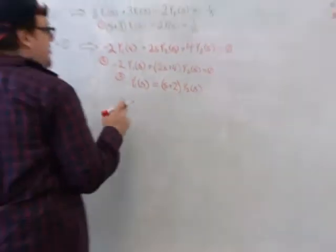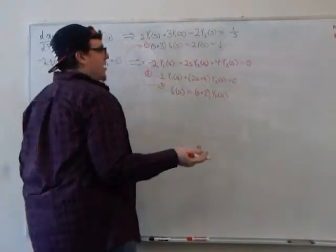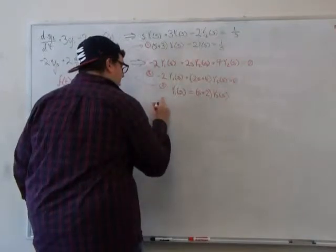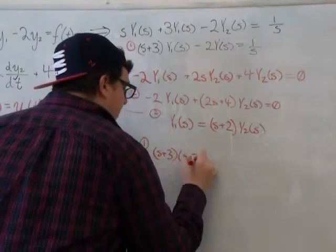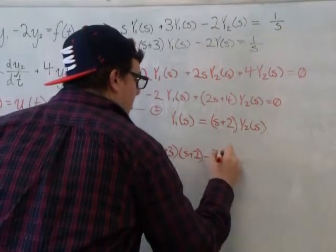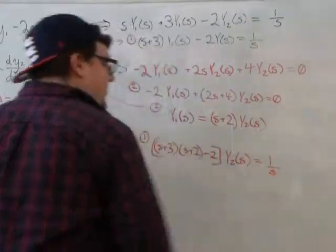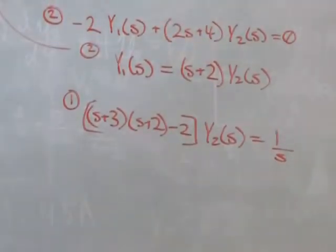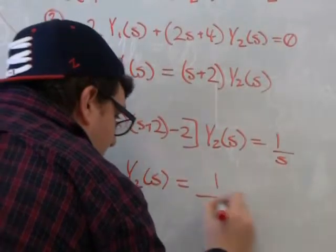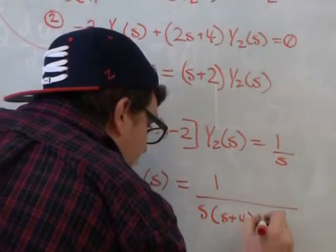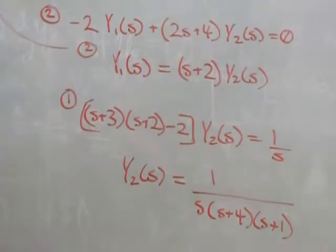And we get that y1(s) is equal to (s+2) times y2(s). And that comes from just the simplification of equation 2. So now that we have this guy, we're going to plug our equation 2 up here into equation 1 for y1, and then solve that out. So we end up with a simplification of equation 1. We get (s+3)(s+2) - 2 all times y2(s) equals 1/s. So now all we have is y2 and other variables that we should be able to solve for. We end up with y2(s) is equal to 1 over s times (s+4) times (s+1). And the reason we get this s+4 and s+1 is from the simplification of this. You can prove that to yourself.